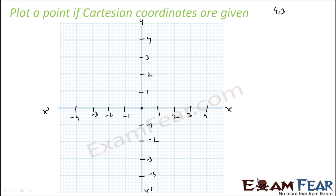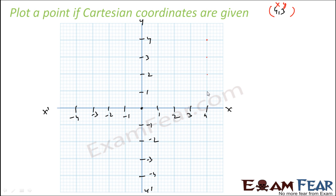Now we have the full Cartesian coordinate system with x and y axes. To plot 4 comma 3, x is the distance along the x-axis, so x equals 4. Any of these points along the vertical line at x equals 4 could be candidates. All these points have x coordinate as 4.